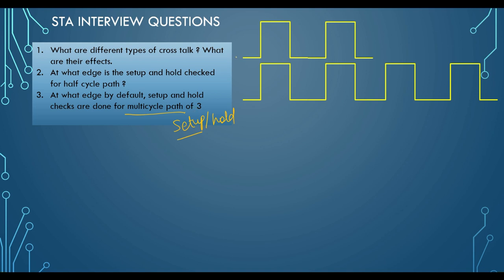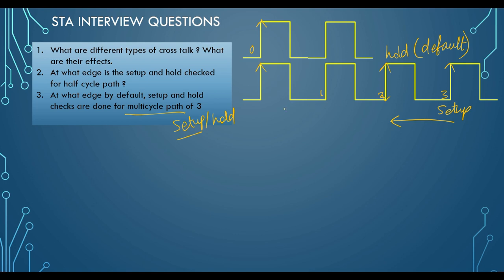Assuming the interviewer confirms it is a multi-cycle path of three for setup: in a timing path, if your launch is happening at the 0th edge, by default setup would be checked at the first edge. But for a multi-cycle path of three, setup is checked at the third edge. For hold, by default the tool takes one cycle back from the setup edge, so it checks hold at the second edge. To check hold at the same edge as launch, you have to explicitly specify multi-cycle path of two — MCP 2 — for your hold check.